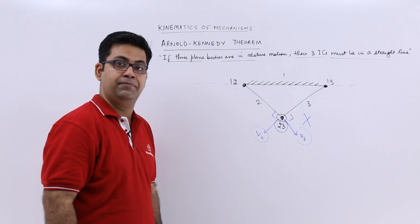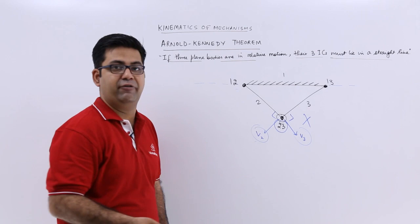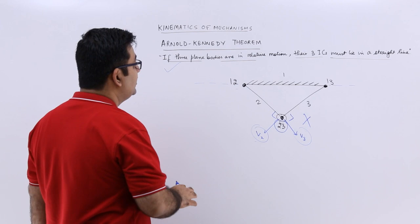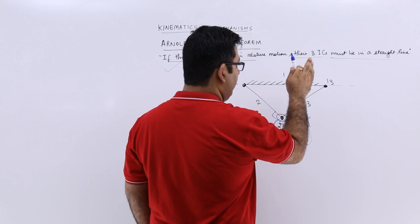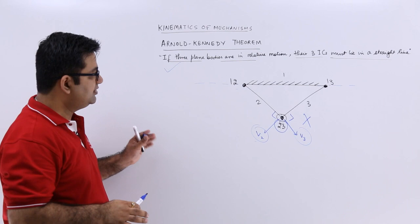Otherwise, the same point has two different velocities. So this theorem is a valid theorem: for three bodies in motion with respect to each other, their respective ICs must lie in the same straight line. Make a note of this. We will use this in the next video onwards, where we start talking about the determination of angular velocities of a link with the help of instantaneous centers.